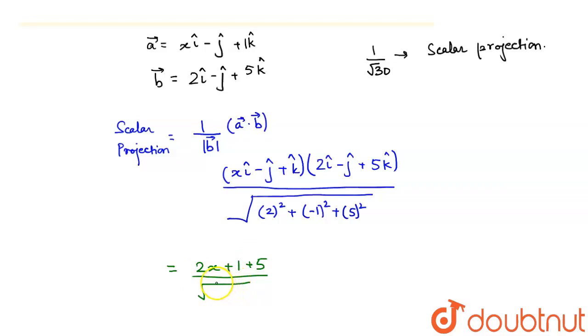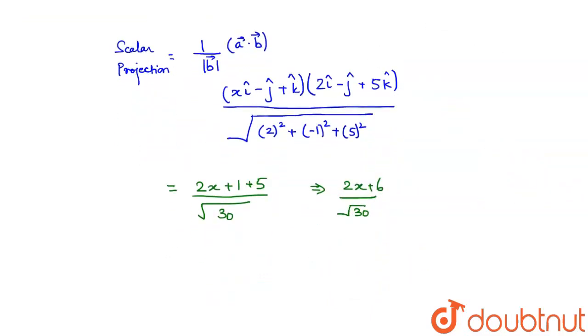The scalar projection is 1 upon root 30. So 2x plus 6 upon root 30. Now it has been given the scalar projection is 1 upon root 30.